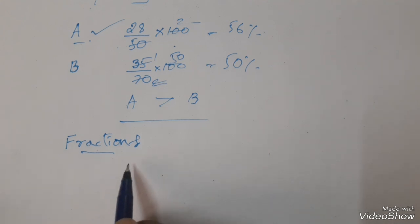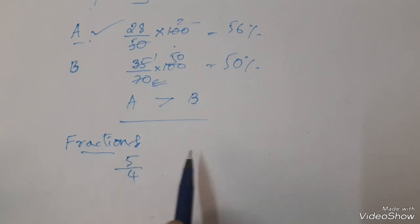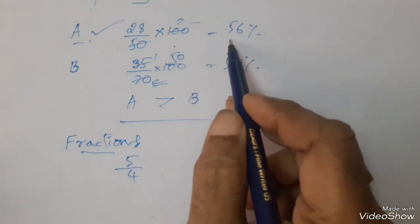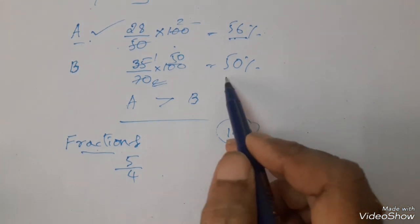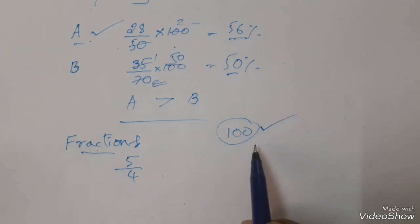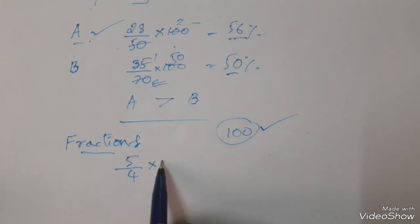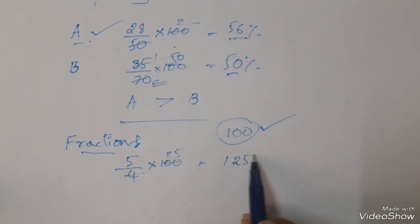For example, 5 by 4 is given. To convert into percentage — percentage means per 100. So 5 by 4 into 100: 4 twenty-fives, 25 fives, gives us 125 percent.